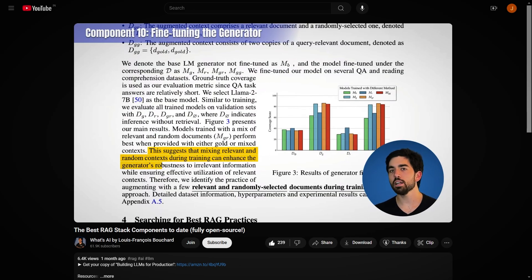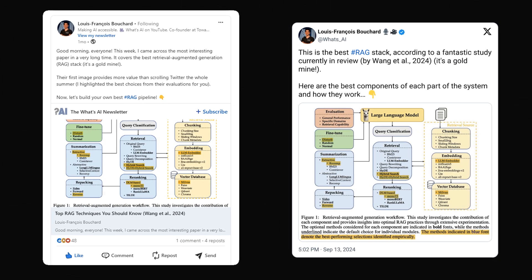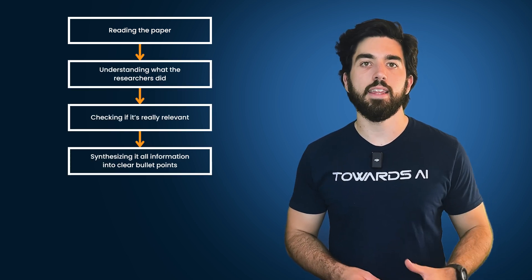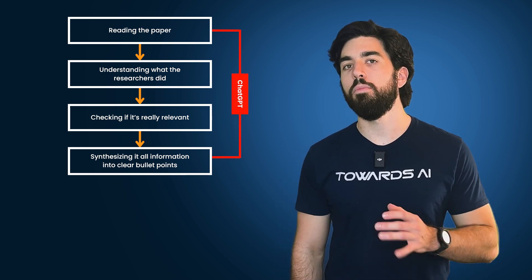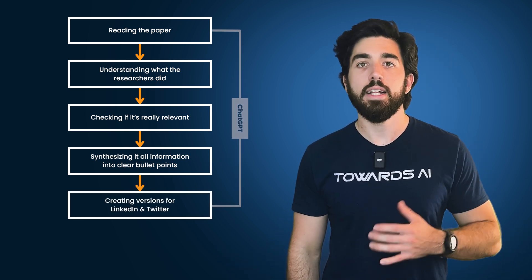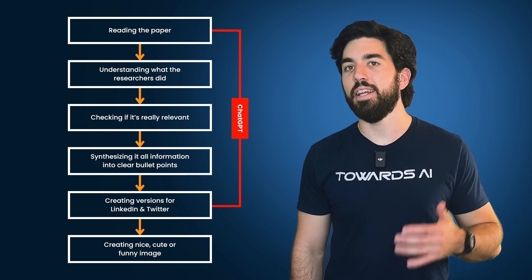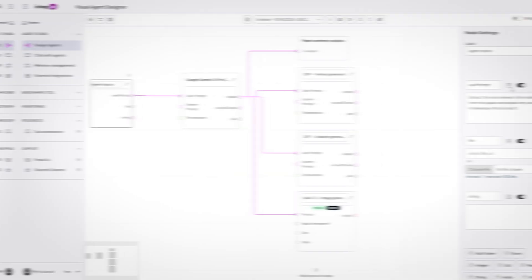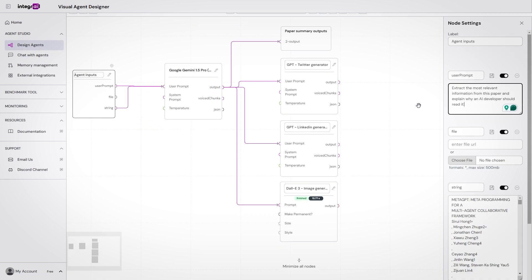I often cover new papers and techniques in the AI field on this channel. Part of what I do is post summaries on LinkedIn and Twitter, highlighting key insights from papers. It requires reading the paper, understanding what the researchers did, and synthesizing it into clear bullet points. ChatGPT can do a good job if you send the paper, but it often requires multiple back-and-forth exchanges. We also want separate versions for LinkedIn and Twitter threads of maximal length, plus a nice, cute, and funny image — all requiring more back-and-forth with DALL-E or another image generator. Instead, I replicated this entire process in one multi-agent workflow that simply takes the PDF as input and generates everything individually.